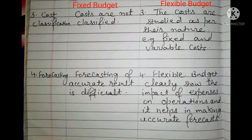The fourth point is forecasting. Under fixed budget, forecasting of accurate results is difficult — if we have to estimate accurate results, it is much more difficult under fixed budgets. Whereas under flexible budget, the budget clearly shows the impact of expenses on operations, and it helps management in making accurate forecasts.